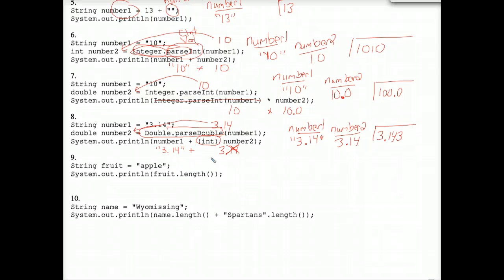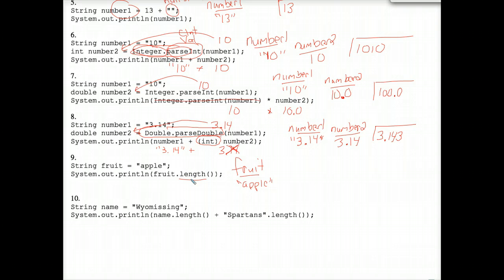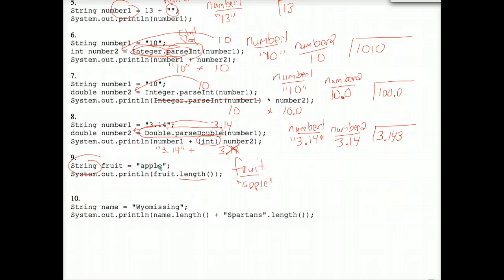Finally, number 9. We have fruit, which stores the word apple. And we have our famous length method that comes from the string class. So anytime you have a string variable, you're allowed to dot length it. And the length is simply the number of characters that are in that string. Let's count, 1, 2, 3, 4, 5. And that's what prints out here. The number 5 prints out because we're doing that in a system out print statement. Don't overthink this.